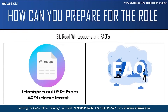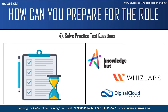The next step is referring to white papers and frequently asked questions. White papers will give you technical knowledge about various AWS concepts and services. Two of the best white papers for the certification are 'Architecting for the Cloud: AWS Best Practices' and the 'AWS Well-Architected Framework'. The frequently asked questions will help you clear your doubts regarding the certification. You can also practice by solving practice test questions available on websites such as Knowledgehut, ACloudGuru, and Digital Cloud Training.